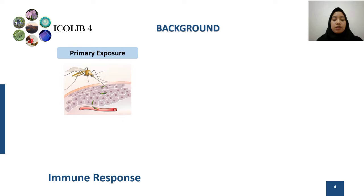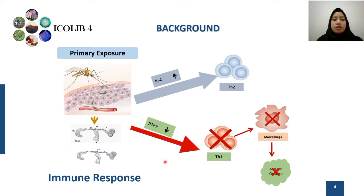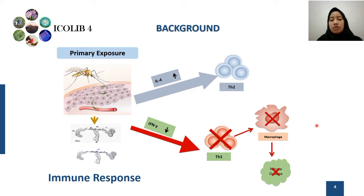Let's talk about the immune response in the host against mosquito saliva. In the primary exposure, mosquito saliva can alter the normal antiviral immune response from TH1 into a TH2 immune response. This can be marked by the suppression of TH1 cytokines such as interferon-gamma and the elevated level of TH2 cytokines such as interleukin-4. As the TH1 immune response cannot be activated, there is no infected cell-killing mechanism in the first exposure to the virus, which supports the virus spread through the host body.